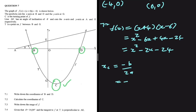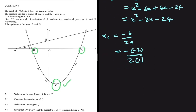Here b is the coefficient of x, which is -2. So we have -(-2) divided by 2a, where a is the coefficient of x², which is 1. That gives us 2 divided by 2, which equals 1. So the x-value of the turning point C is 1.